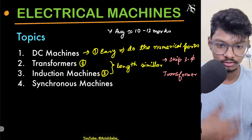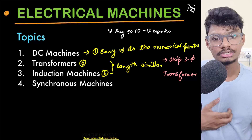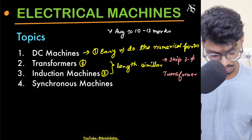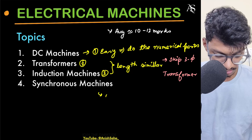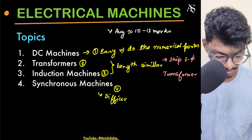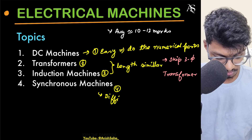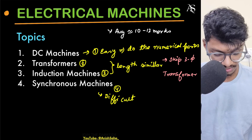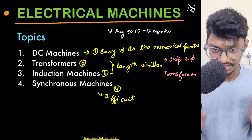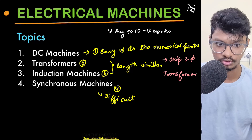For induction machines, try to cover everything including the numericals. For synchronous machines, this is the fourth priority — it is difficult and you cannot skip everything, but if you absolutely must skip something, synchronous machines is the one. I would not recommend skipping anything from machines, but if forced, skip synchronous machines and the three-phase transformer.